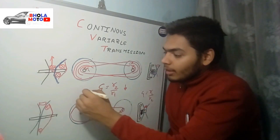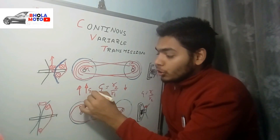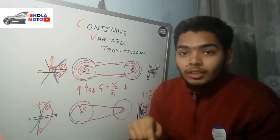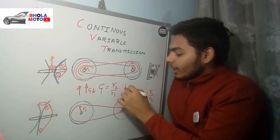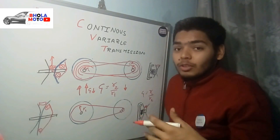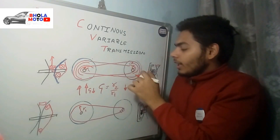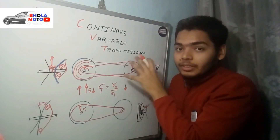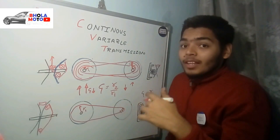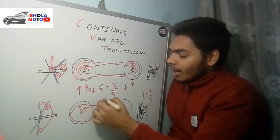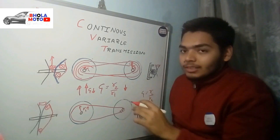When RPM increases, the vehicle speed should also increase. To increase speed, the gear ratio should decrease — meaning less reduction — so more RPM is transferred to the wheels. R1 is the initial radius of the driver pulley and R2 (maximum) is the initial radius of the driven pulley. The gear ratio is R2 divided by R1, which is highest at initial condition. As RPM increases, R1 increases and R2 decreases, so the gear ratio keeps decreasing.